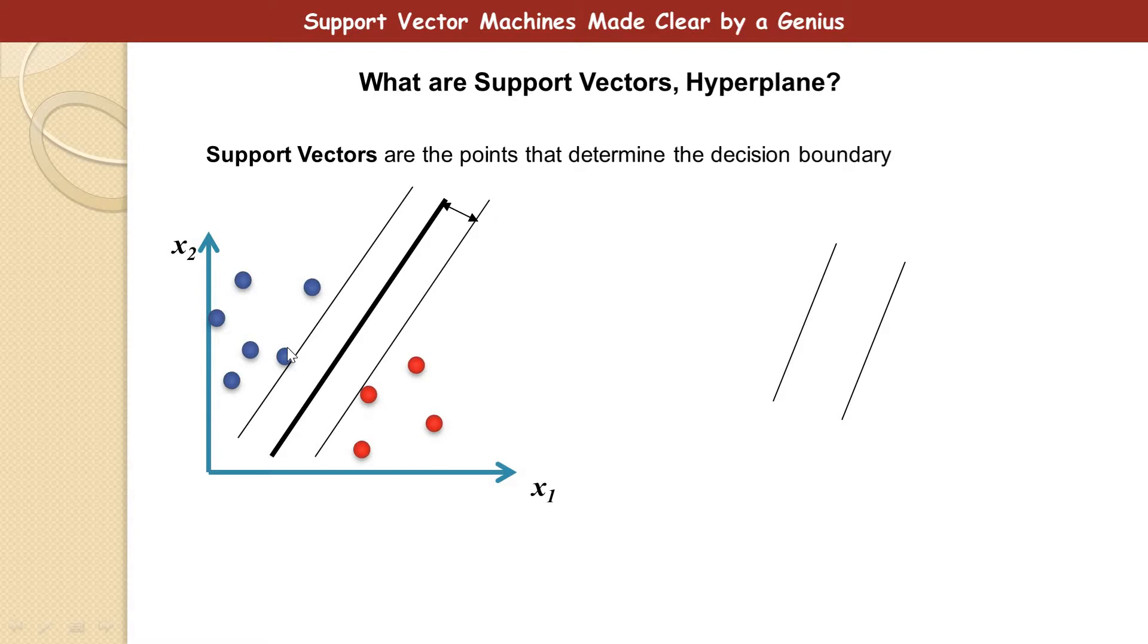So this point, we can see, I can now outline this point using a paint. So we have this point here, we have this point, they are the support vectors, right? Good.